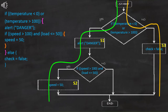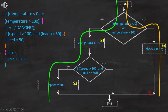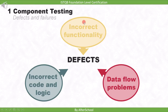Here is a piece of code where we are performing statement coverage testing. The code is available to the tester, and from it we have a flowchart, using which we test each statement. While performing statement coverage, we come to know if the code is implemented correctly, data is flowing as expected, or the logic is correct. Defects related to incorrect code logic or incorrect implementation are found in component testing.